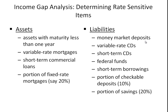Likewise, there are liabilities that have interest rate sensitivities: money market deposit accounts, where depositors earn a rate based on some money market rate; variable rate CDs that adjust; and short-term CDs that are maturing, which people will roll over into new CDs — and the bank will pay a higher or lower rate of interest accordingly.